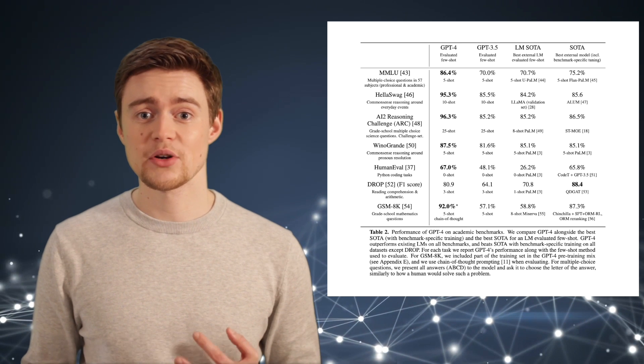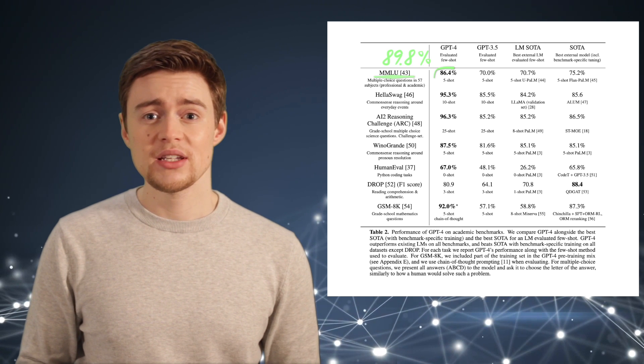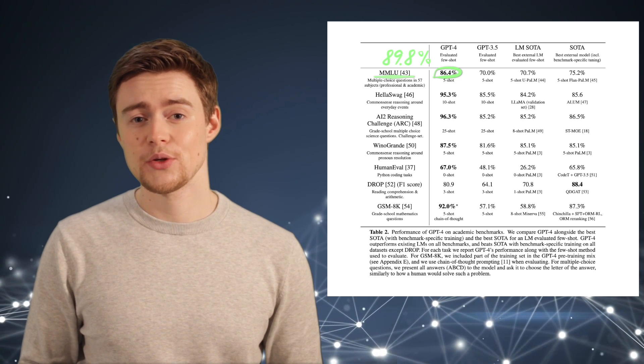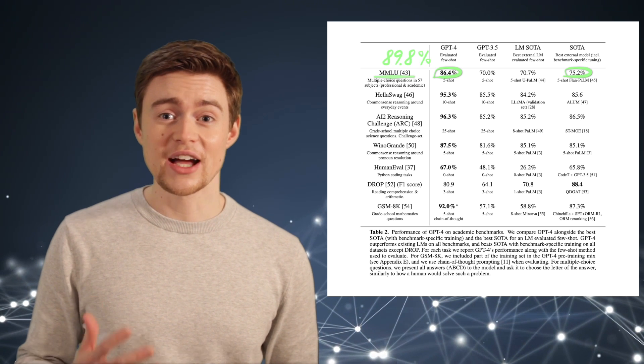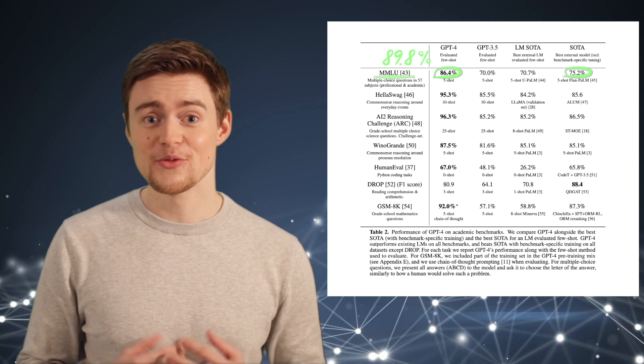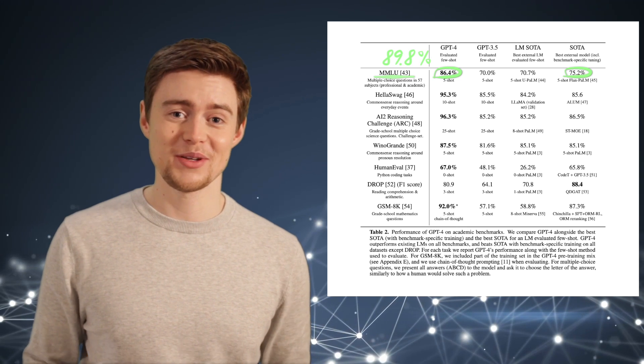For example, the expert level accuracy for MMLU is approximately 89.8%. GPT-4 is very close to that and beats the fine-tuned Flan-PaLM model from Google by a big margin. Flan-PaLM has 540 billion parameters, which is three times more than what GPT-3 has, but then again we don't know how big GPT-4 is.